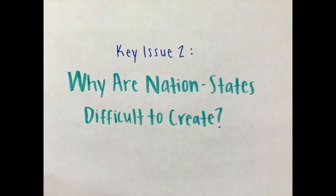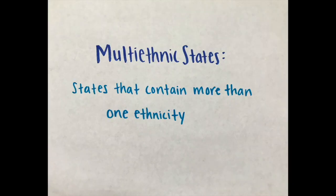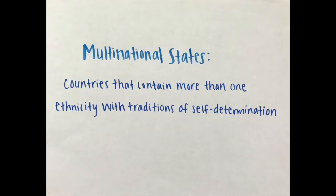Key Issue 2: Why are nation-states difficult to create? There is no such thing as a perfect nation-state because the territory occupied by a particular ethnicity never corresponds precisely to the boundaries of countries. A multi-ethnic state is a state that contains more than one ethnicity — a good example is the United States. A multinational state is a country that contains more than one ethnicity with traditions of self-determination. The Soviet Union was an especially prominent example until its collapse in the early 1990s.